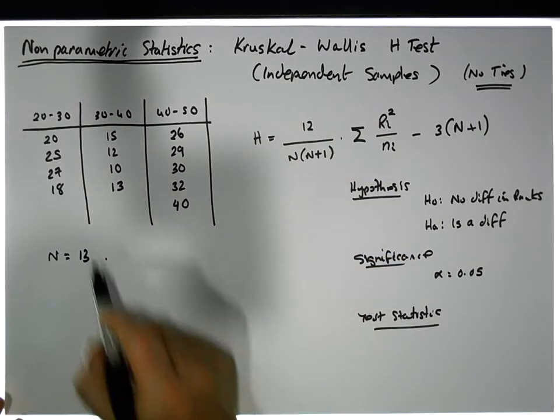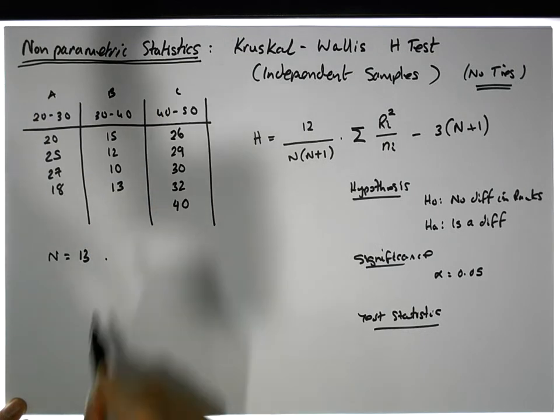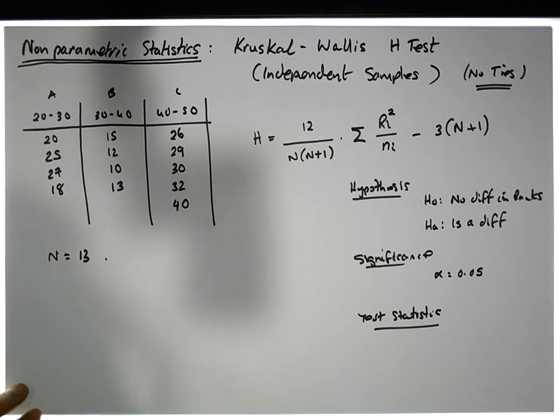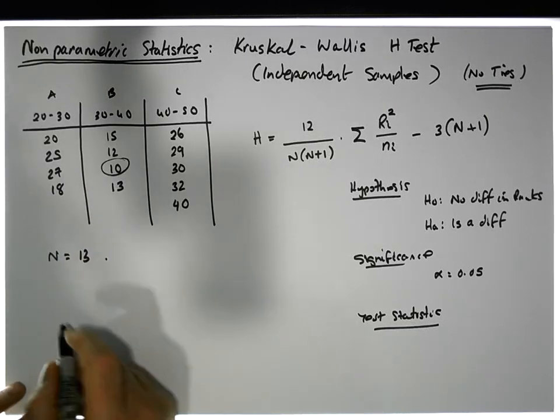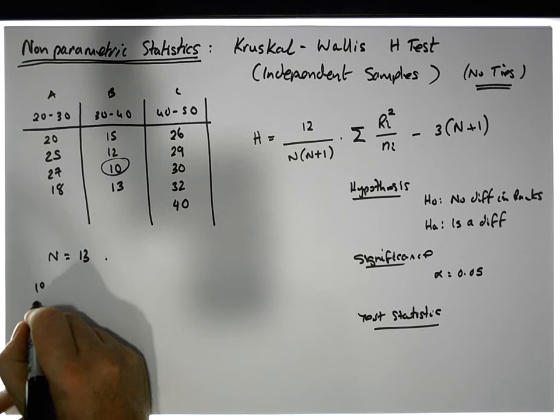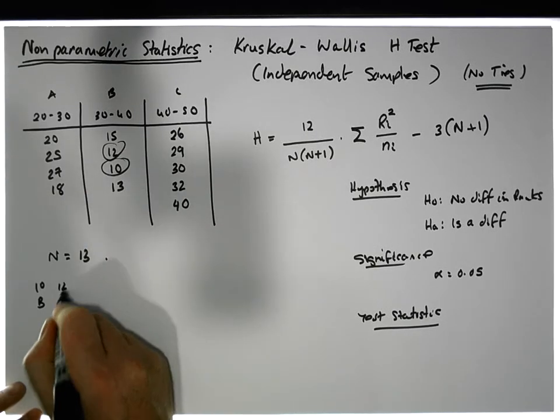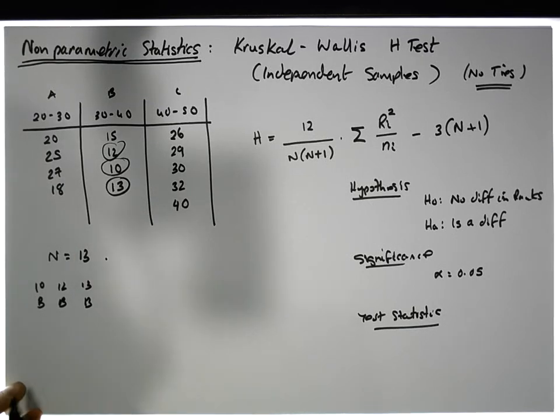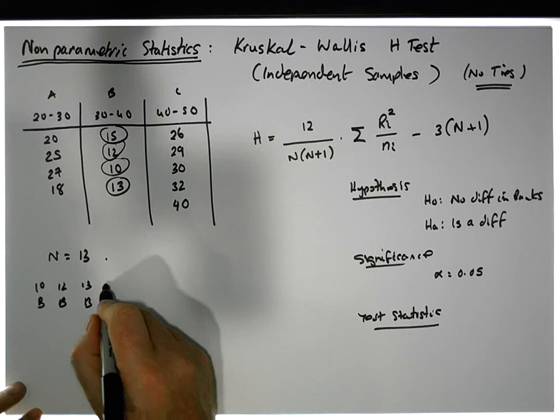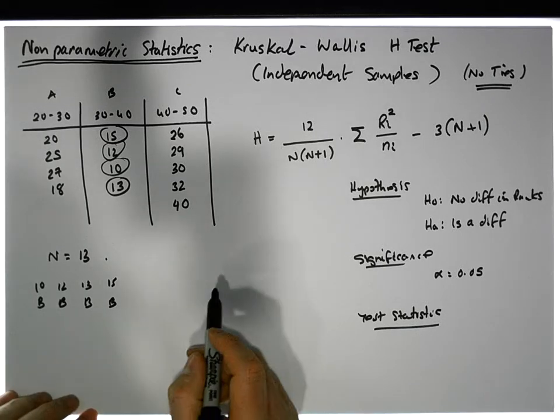So what we're going to do is take all the observations. Let's call this group A, group B, and group C. And let's rank the observations from smallest to largest, keeping track of the groups that we're in. So the smallest value that we have in this particular data set seems to be a 10, and 10 is associated with group B. The next smallest value seems to be a 12, 12 is also associated with group B. The next smallest value is a 13, which is associated with group B. The next smallest value is a 15, which is associated with group B. The next smallest value is…